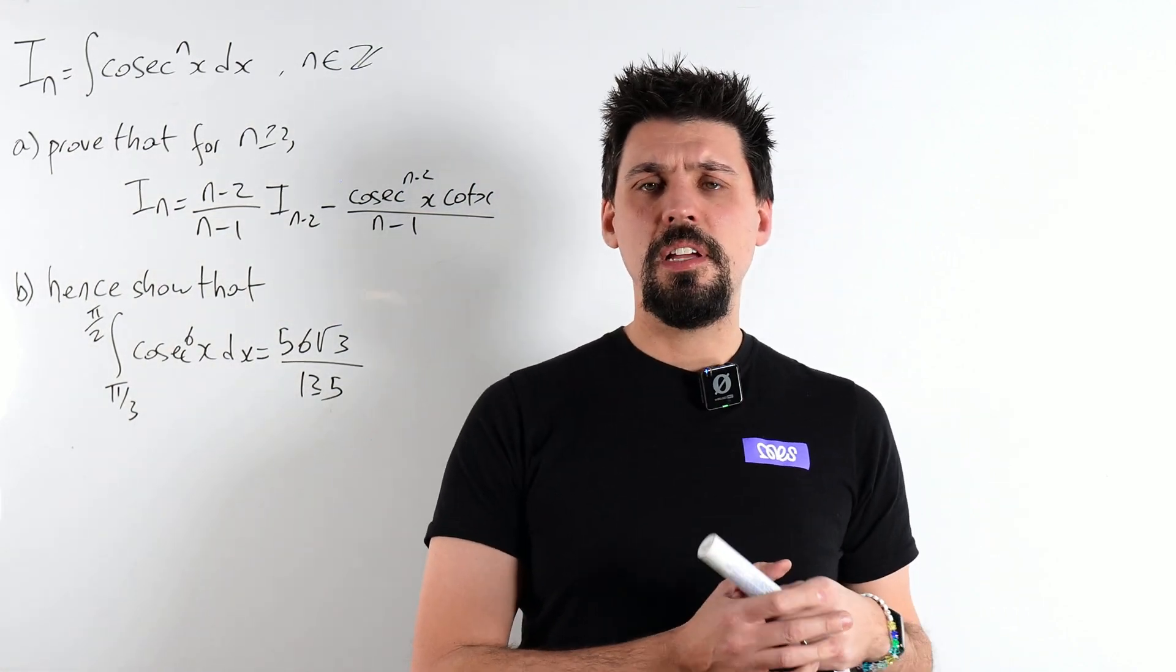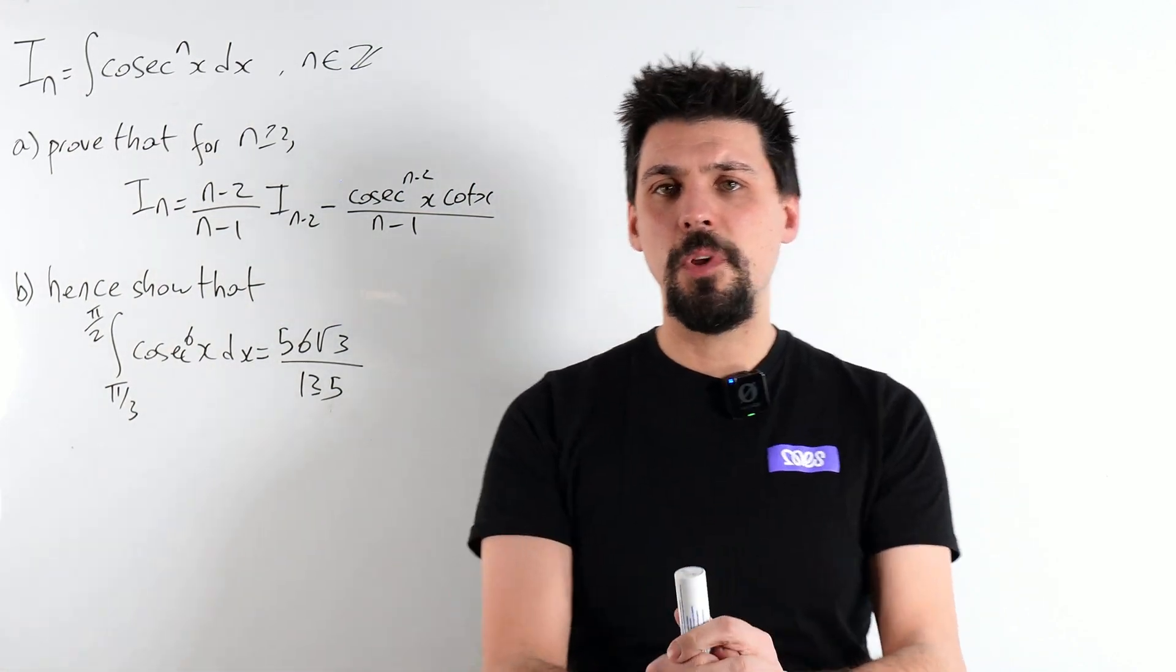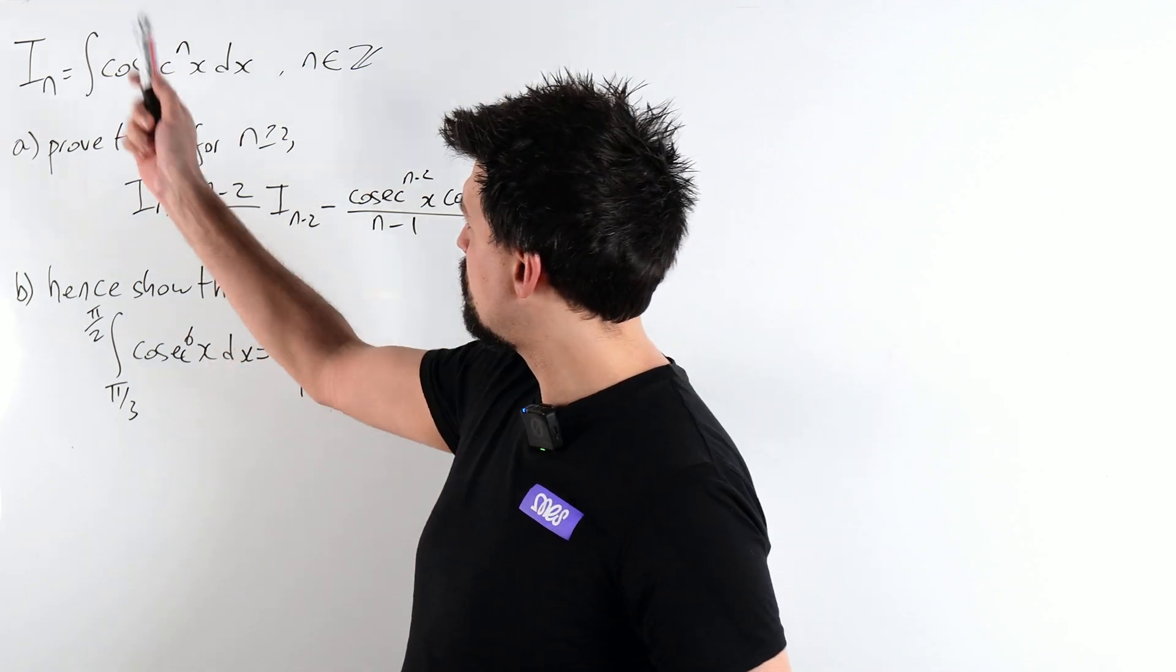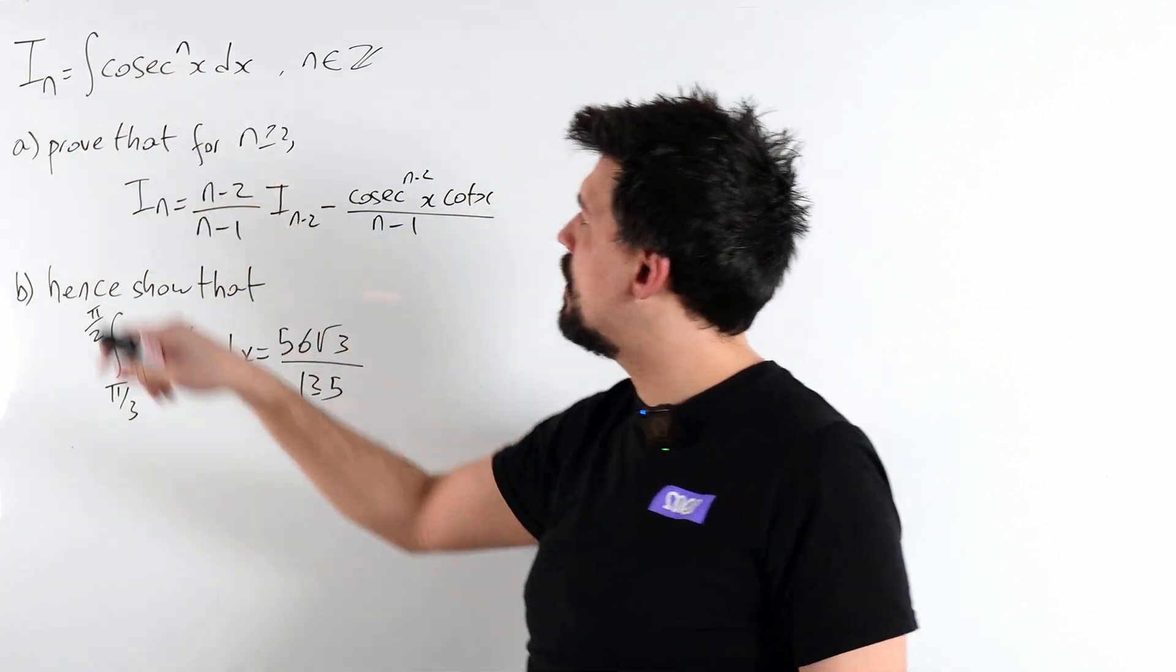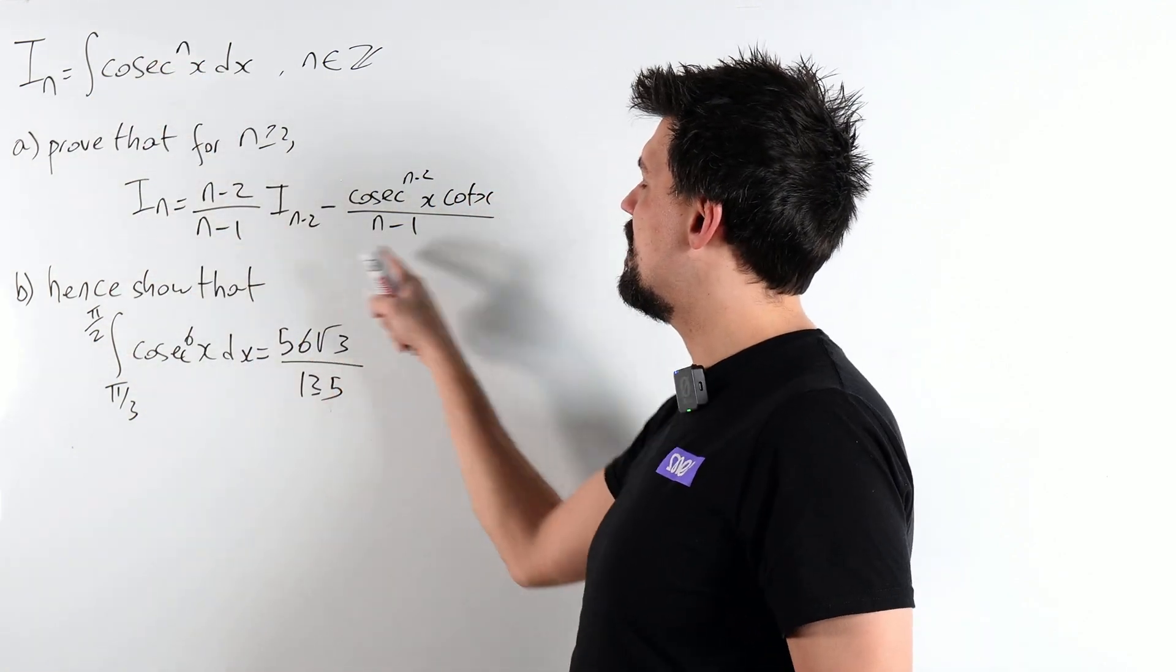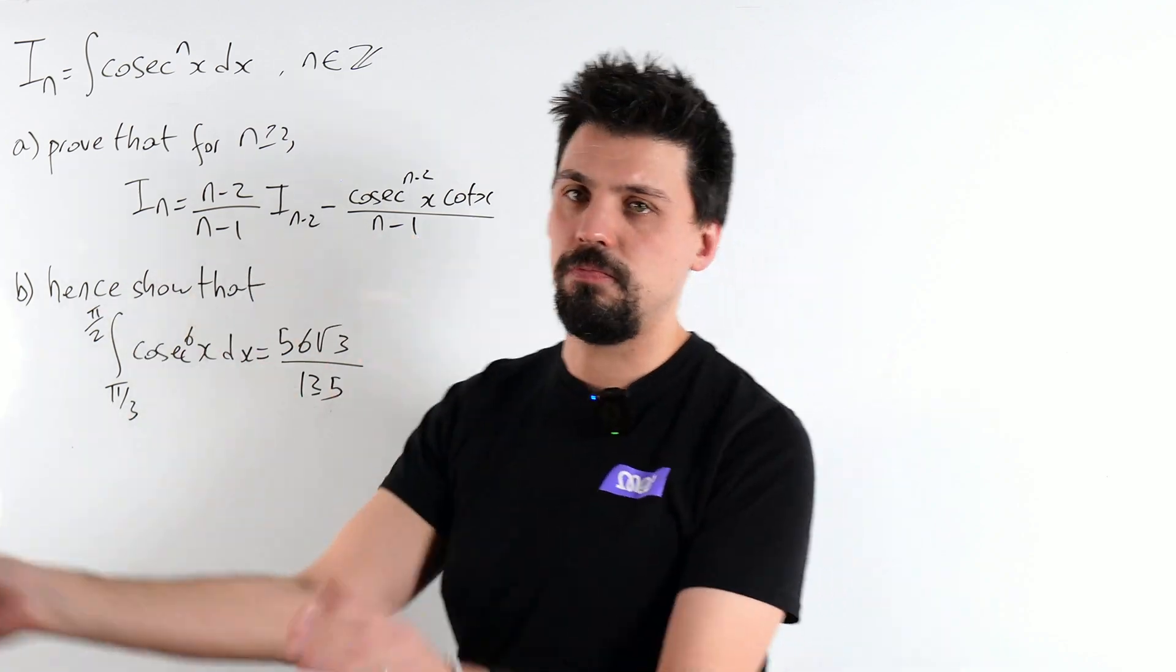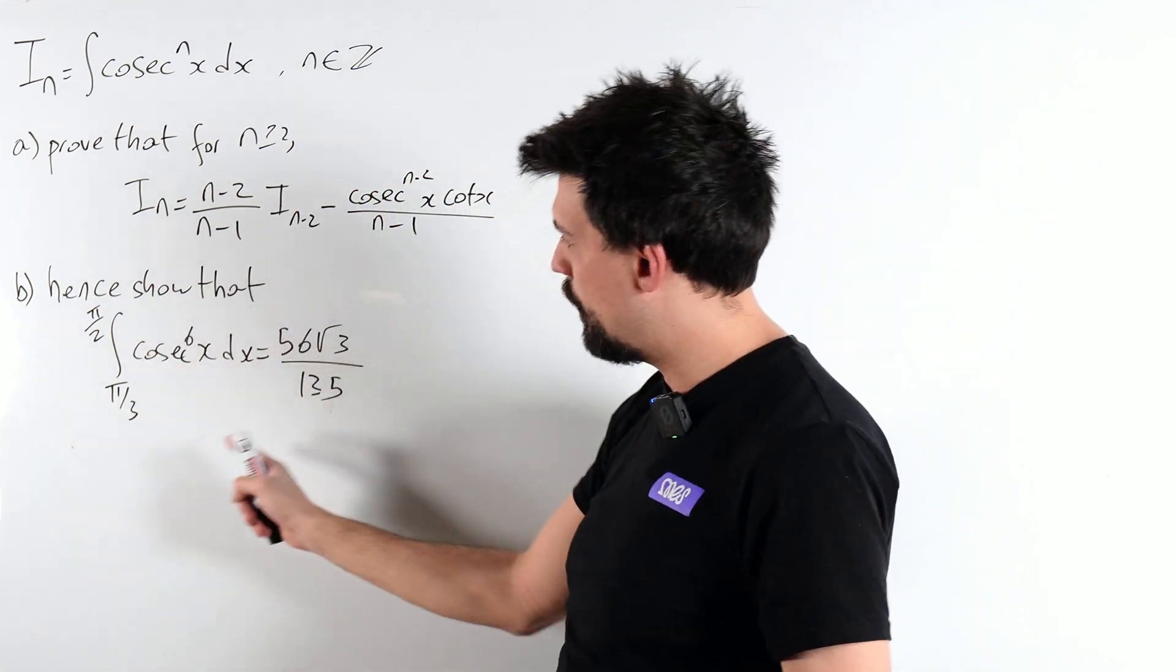G'day, welcome back to Nick Does Maths. Today we are playing around with reduction formulae. Here is an integral, i_n is the integral of cosec to the power of n of x. We need to show that this is true. Let's start with that, then we're going to use it.